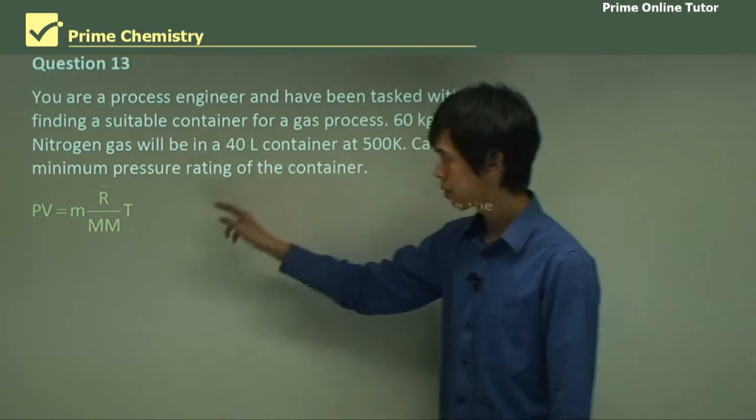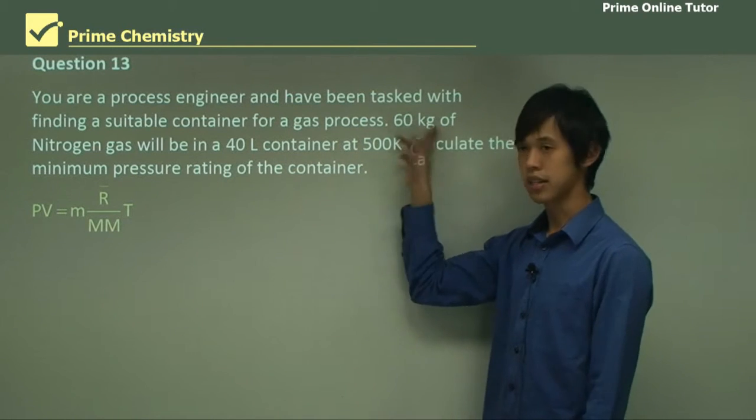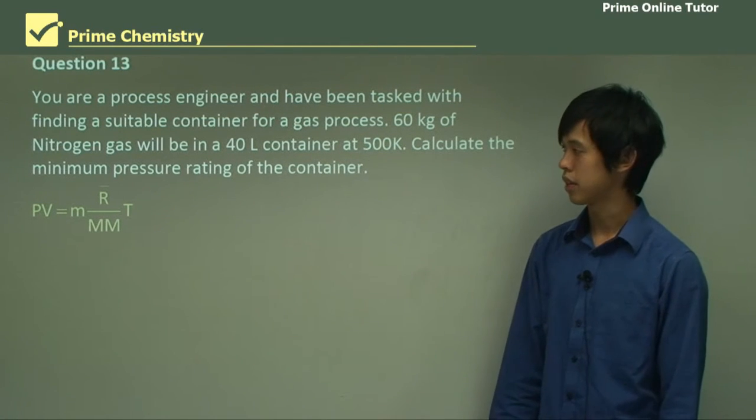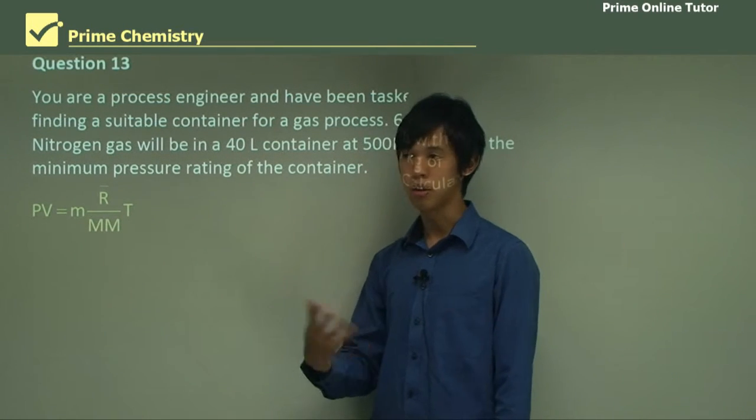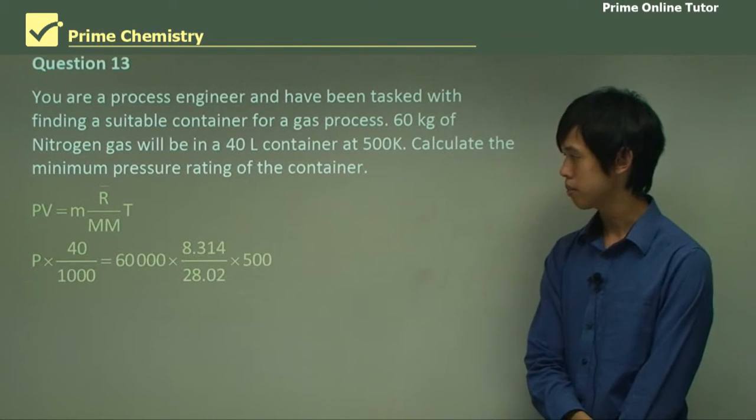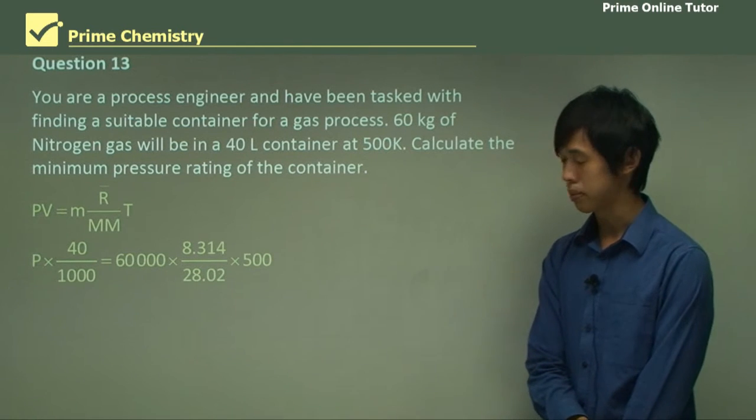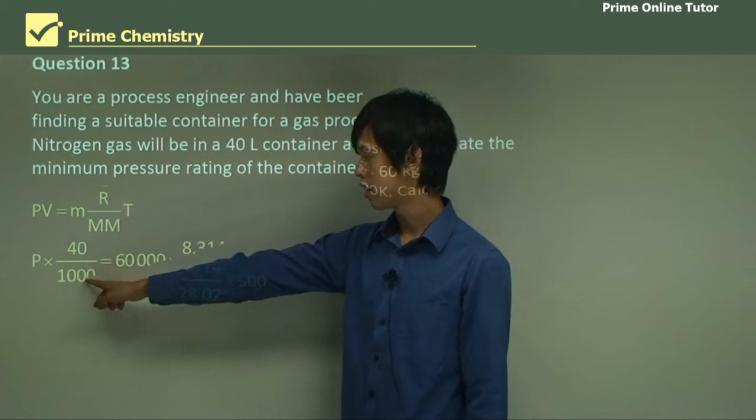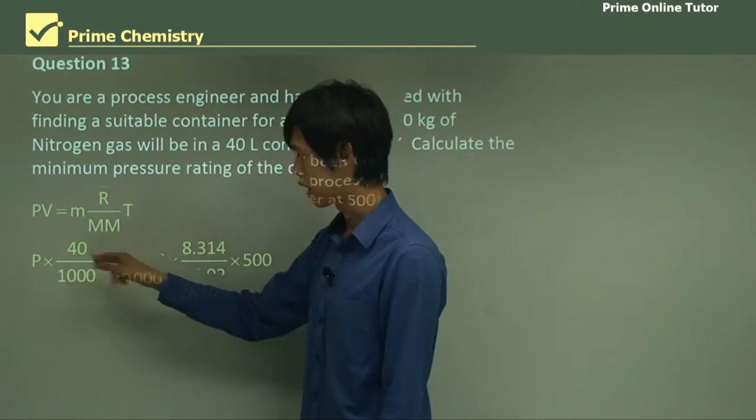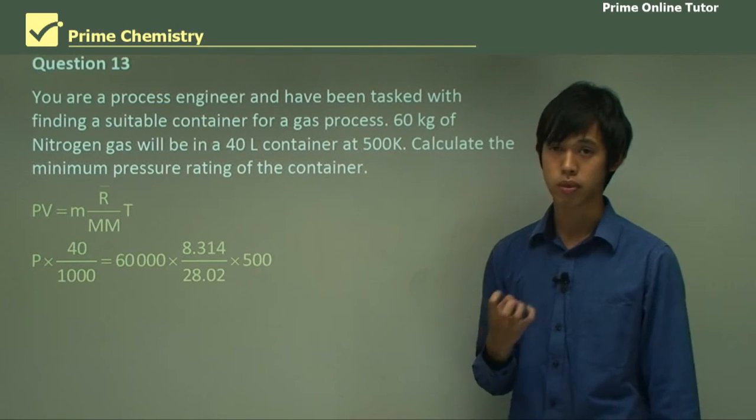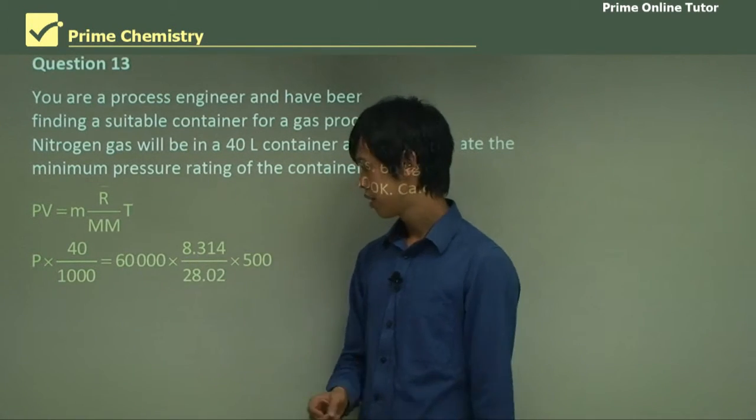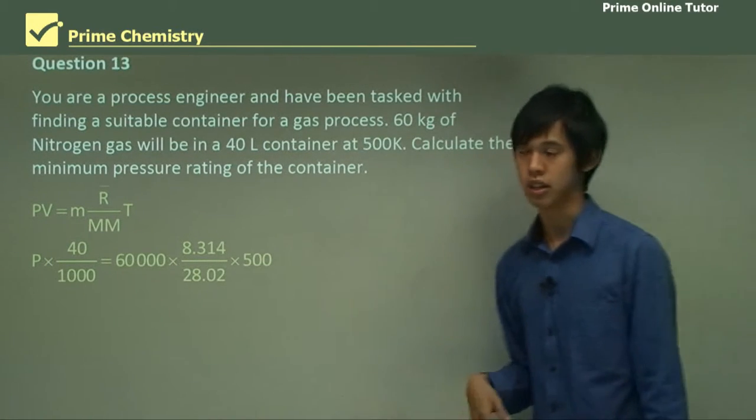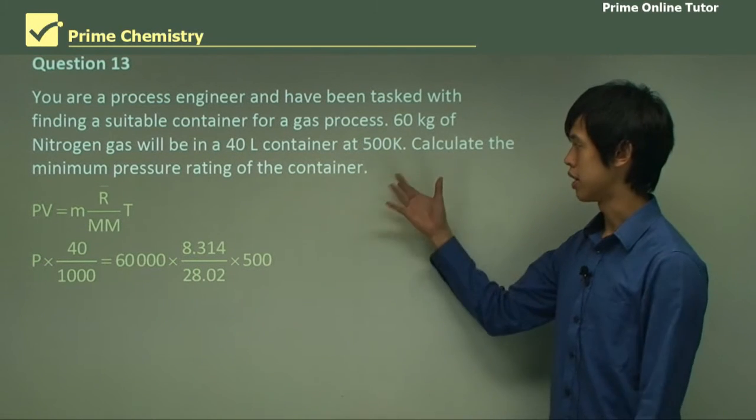Now, this time we're going to use this one. And the reason why I'm going to use this one is because I've got a mass here. I don't have moles. I could just convert this to moles, but why waste the effort when I already have an equation that works? So remember that it's mR with no bar, but R with no bar is just R bar on molar mass. So P times 40 over... So now we're just subbing in numbers. And remember, SI units. Cannot stress this enough. SI units. So 40 over 1,000 to make it into meters cubed. So 40 liters divided by 1,000 is the number of meters cubed. 60,000 grams. This is the number. We can't change that number. 500 Kelvin is fine. And 28.02 is the molar mass of the nitrogen.